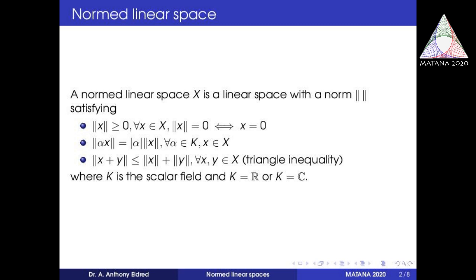A normed linear space has a vector space structure along with a metric structure which is induced by the norm: D(x, y) equal to norm of x minus y. In a normed linear space, the scalar field is either R or C. In simple examples, we have the scalar field as R itself.